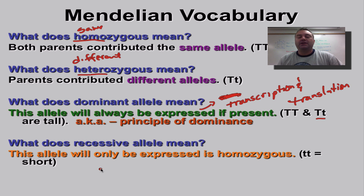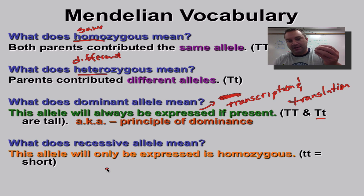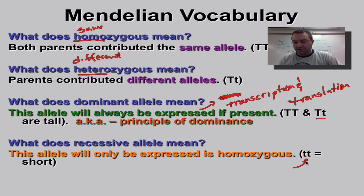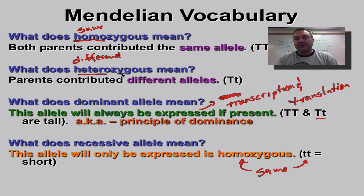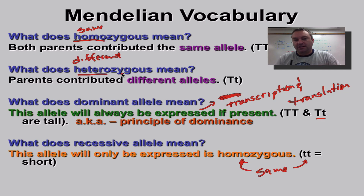Recessive means an allele is only going to be expressed if it's homozygous. The only way the short recessive allele shows up in a pea plant is if it got a short allele from mom and a short allele from dad — in other words, homozygous. So to recap: homozygous means both alleles are the same. Heterozygous means different alleles from each parent. Dominant means the allele will be expressed no matter what. And recessive can only be expressed if both alleles are the same.